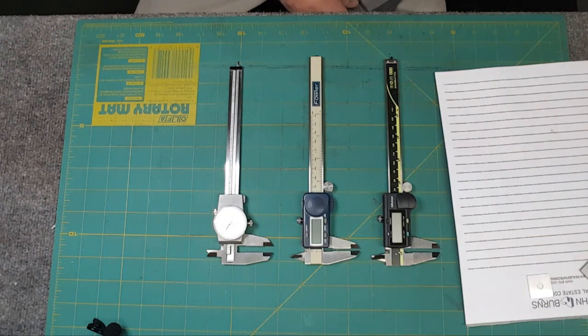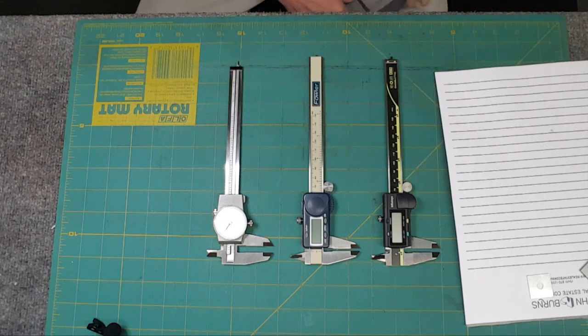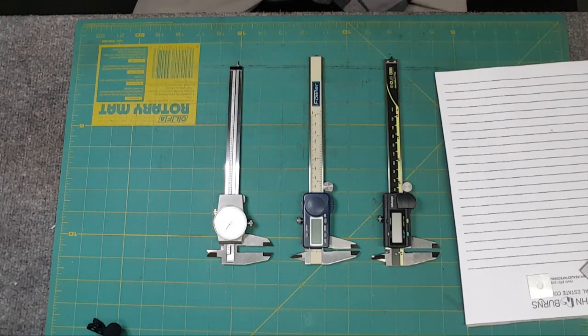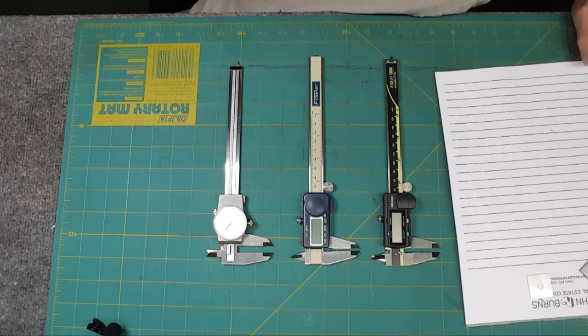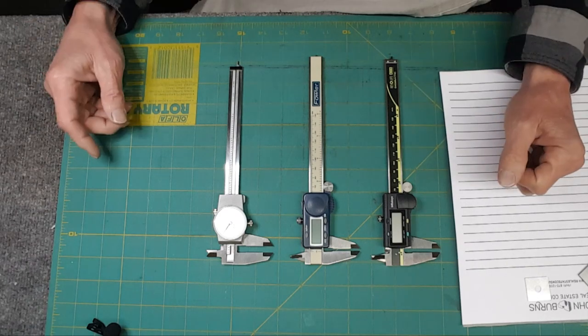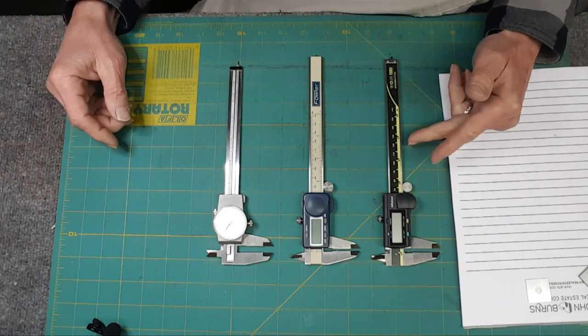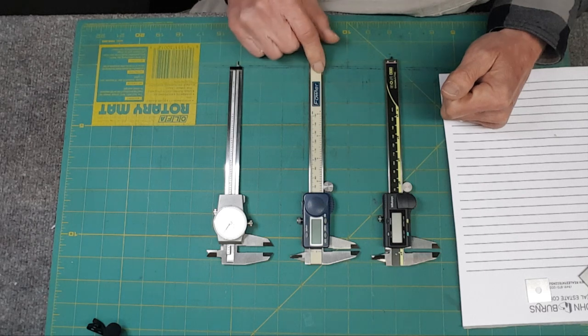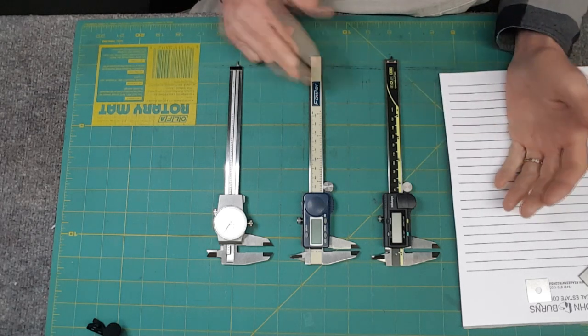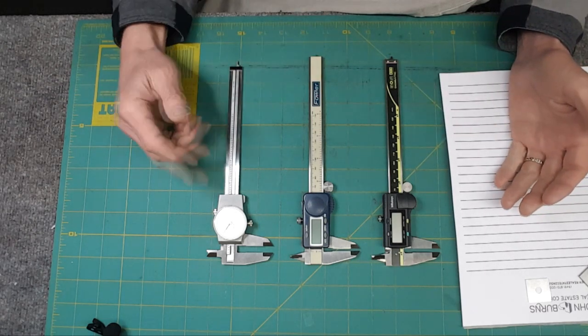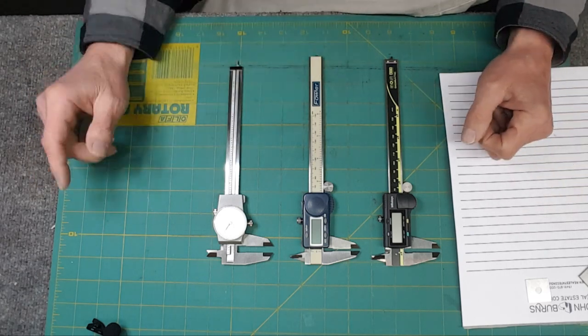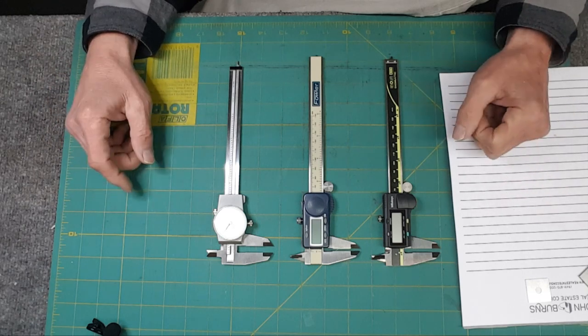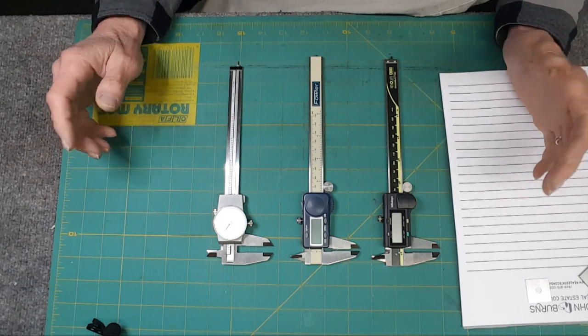The first thing I absolutely think every shop needs is a caliper. And there are lots of them out there, let me tell you. What's the difference in them? Well, Mitutoyo, $160, Fowler, about $40, Brown and Sharp Dial, about $120. This was the first one that I ever bought, and I've used it like crazy.